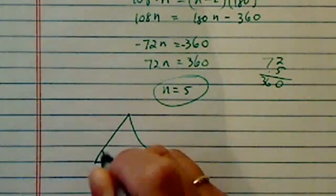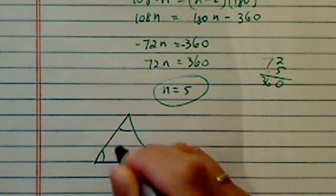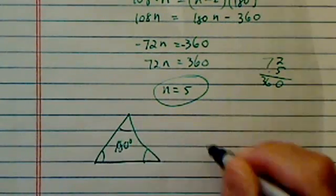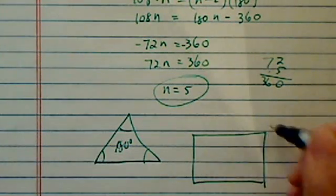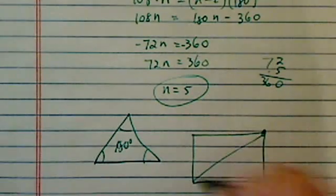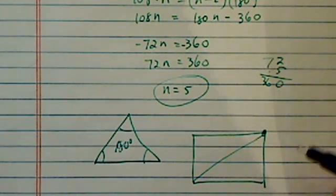If you have a triangle, everybody knows triangle has 180 degrees. Okay, now watch when you have a square. A square is really just two triangles.